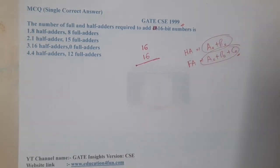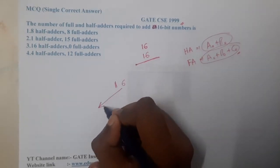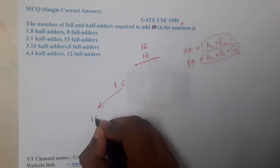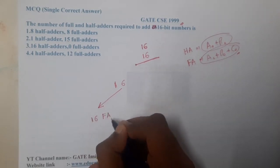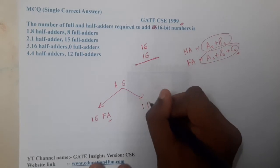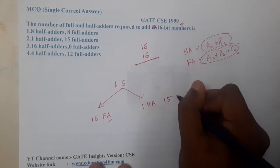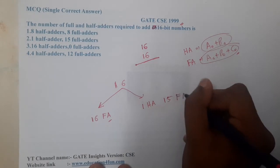So to add 16 bits, there are two approaches. The first approach is use 16 full adders. And the second approach is use one half adder and the rest full adders, that is 15 full adders (16 minus 1 is 15 full adders).